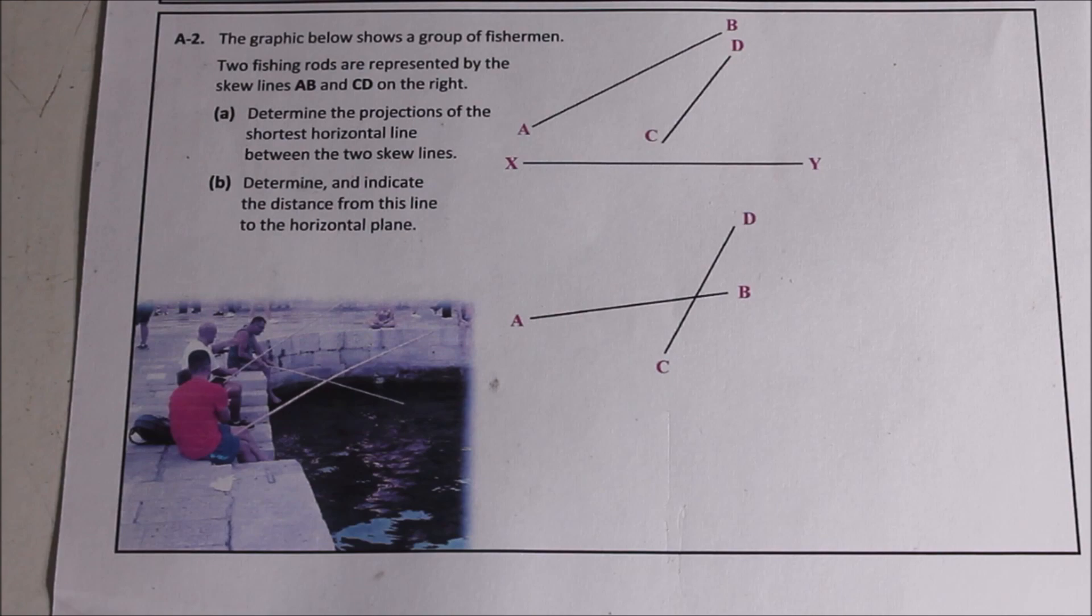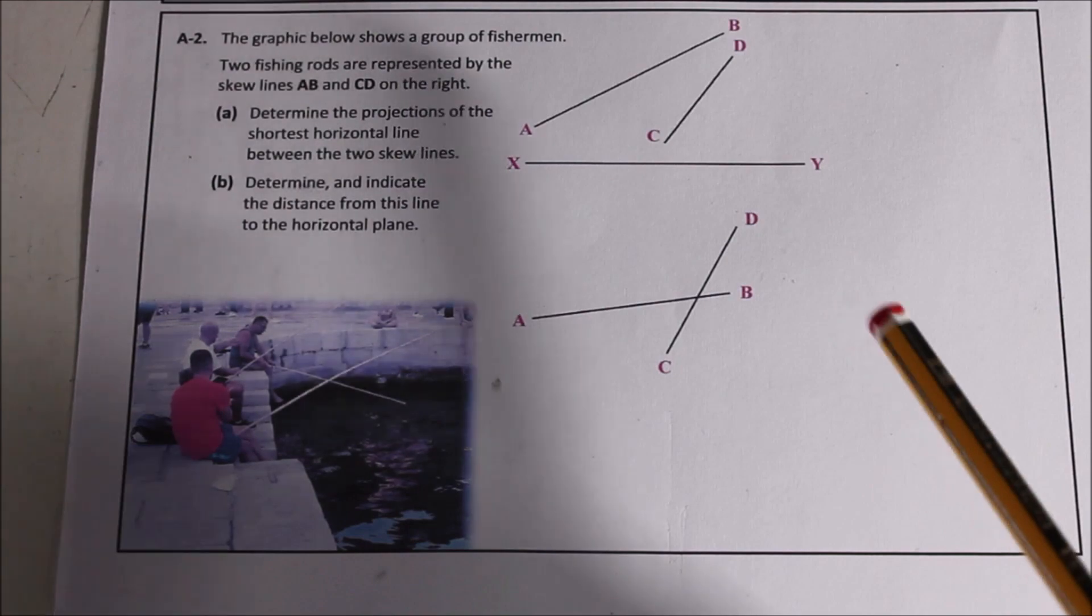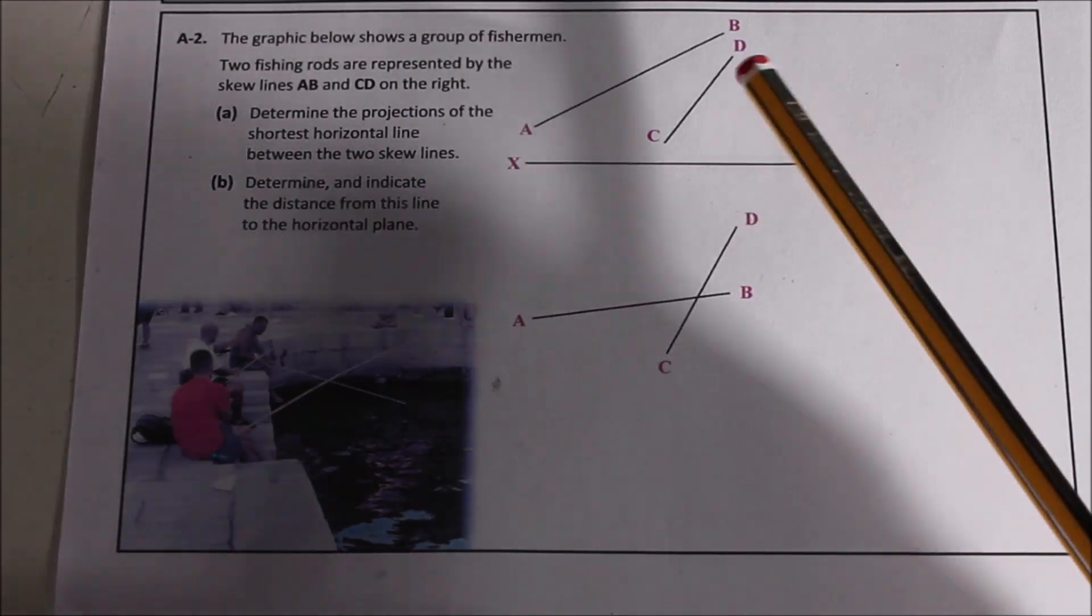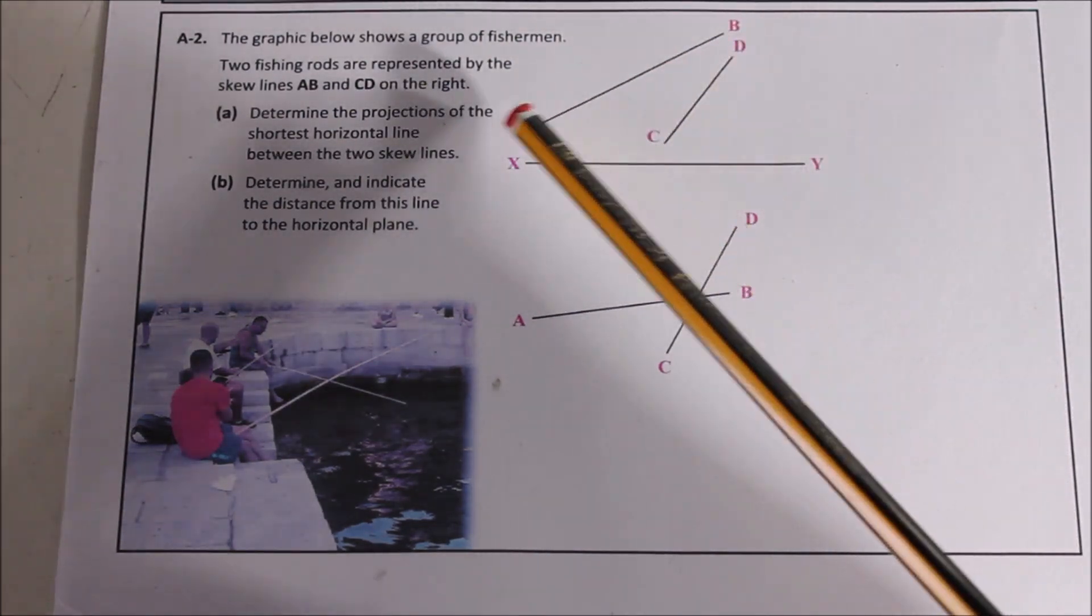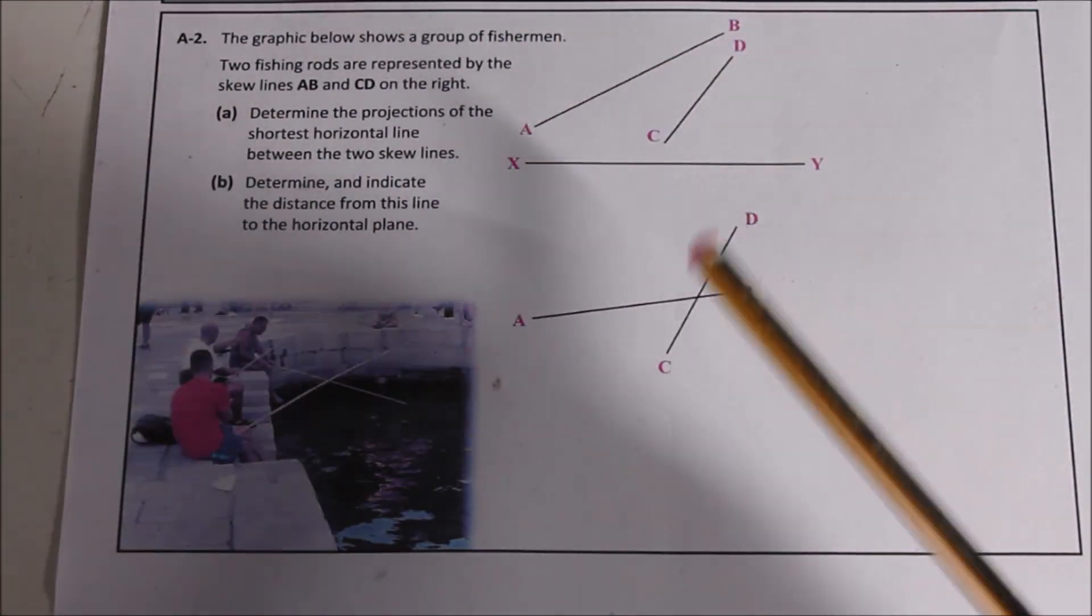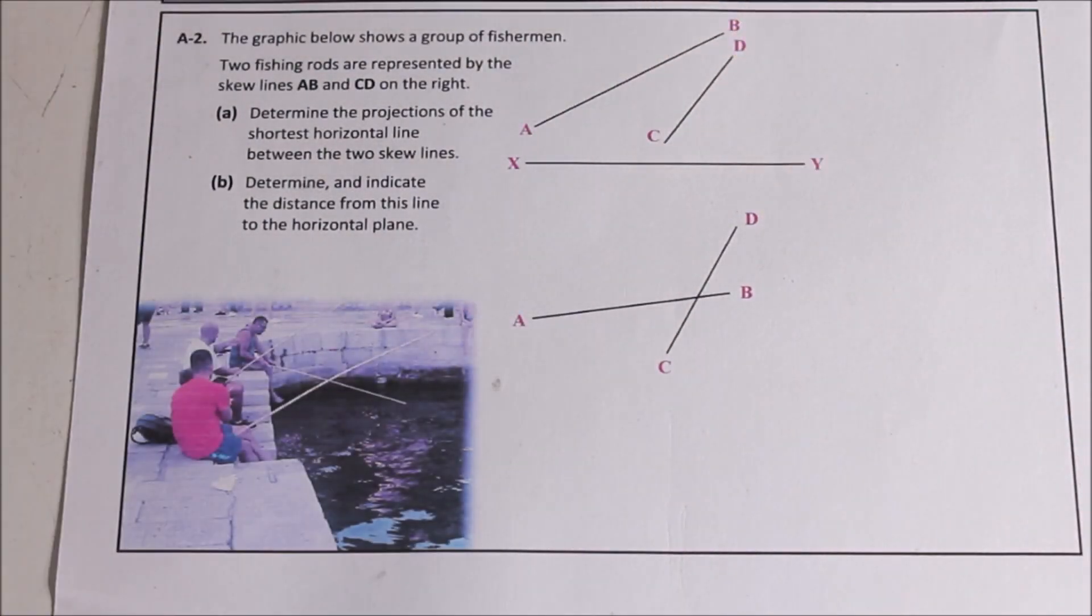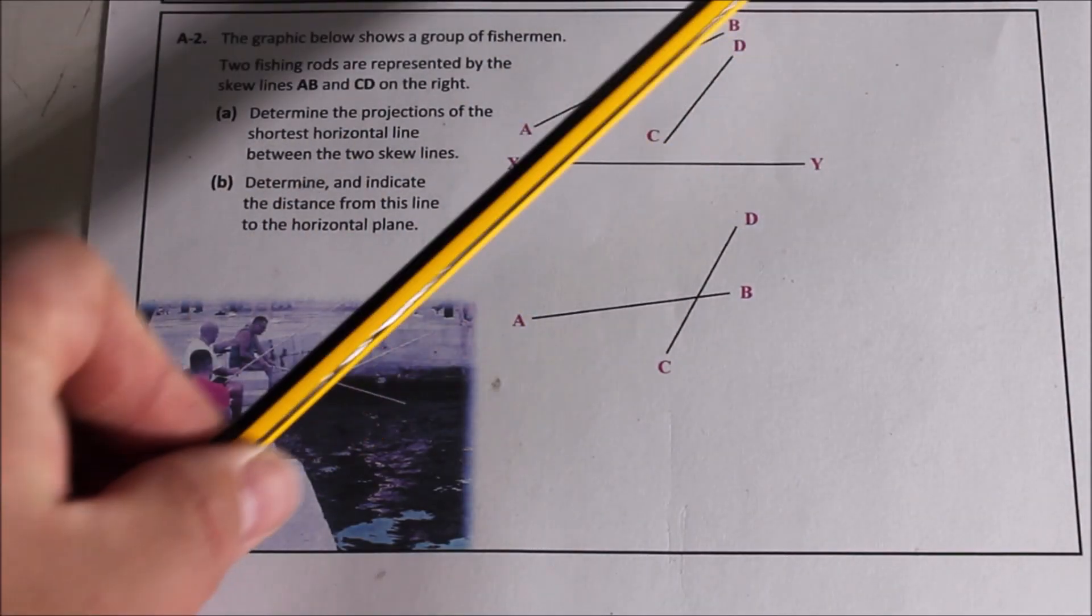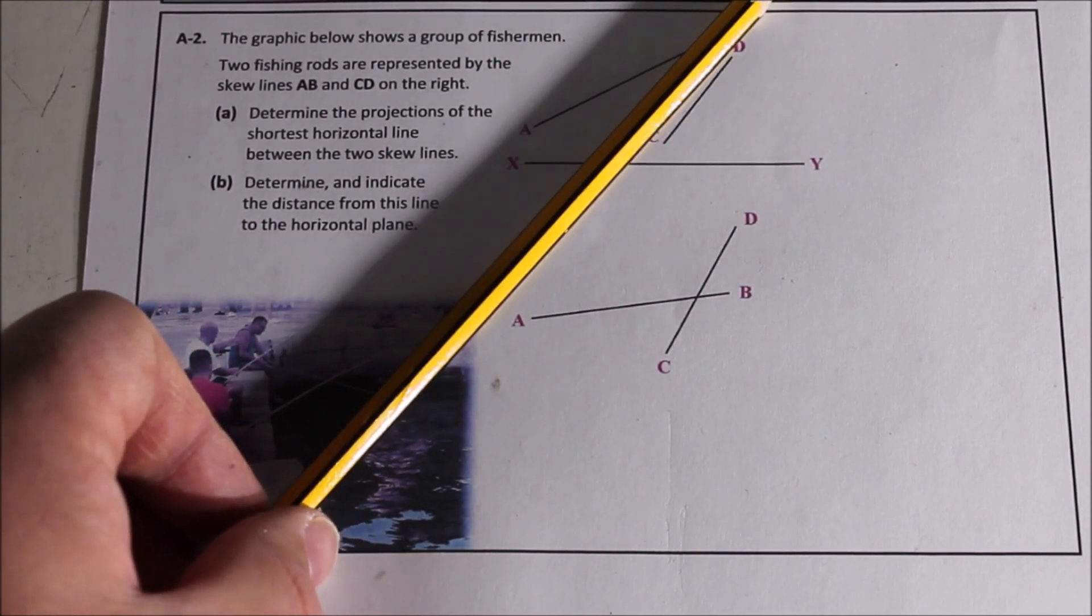So next to the skew lines question. When it comes to skew lines, no matter what they ask you to do, you must always make a plane of the two skew lines. So what I mean by that is we need to project either CD onto either B down here or A and then do the same in plan. Make a triangle using the angles of the two skew lines. And before you do that, you must kind of go through it quickly. So if we bring CD up to B and project it down this direction, bring A horizontally across.